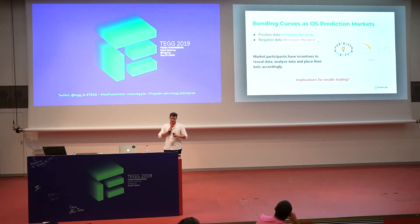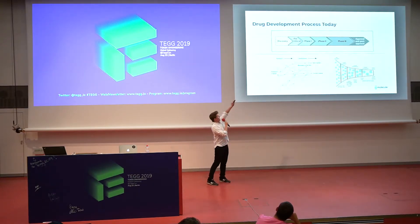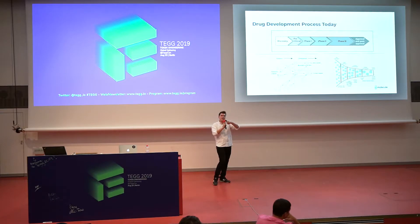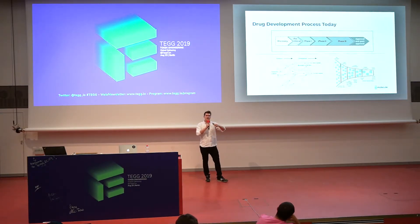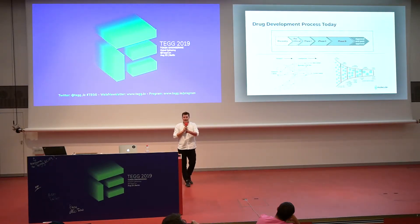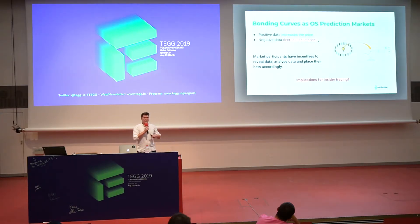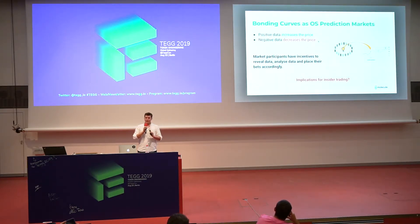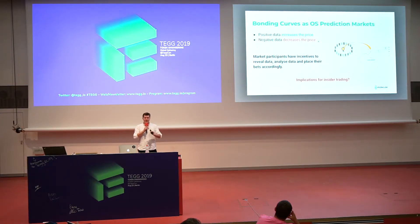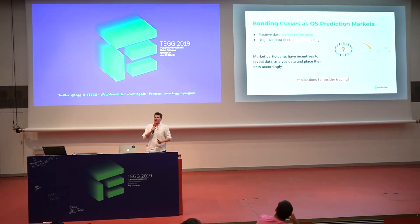Once we create these open markets for IP, we can take each asset in an early stage development process, attach it to a non-fungible token to make it unique, and create a market for each asset. Different market participants can then start curating and releasing information about the assets because they can positively or negatively influence their prices. Bonding curves have similarities with prediction markets here — positive data likely increases the asset's price, negative data likely decreases it, giving participants an incentive to reveal and analyze data.